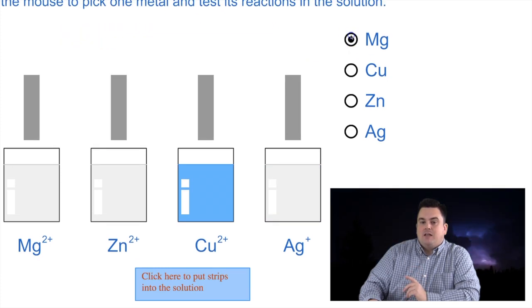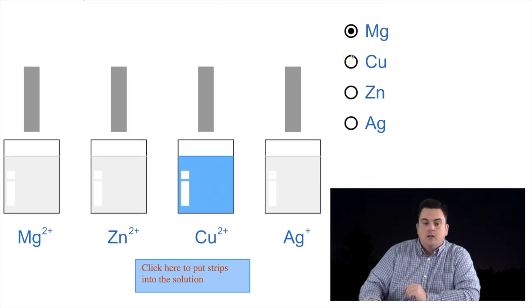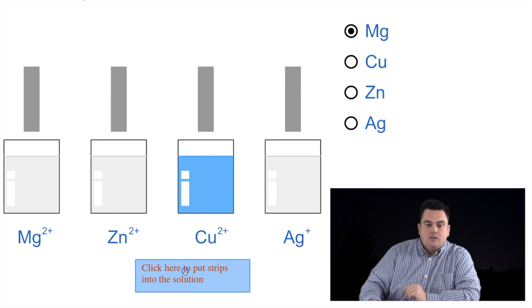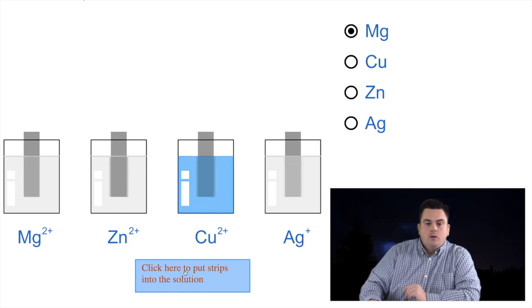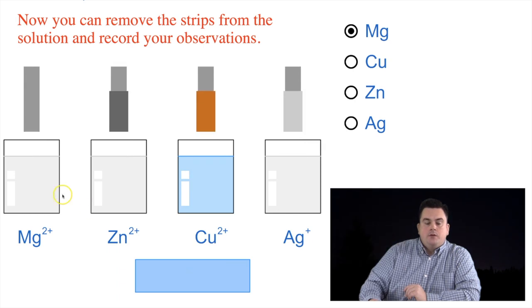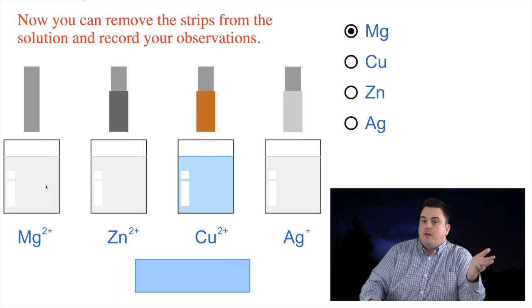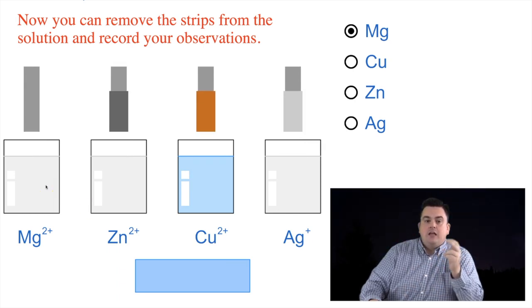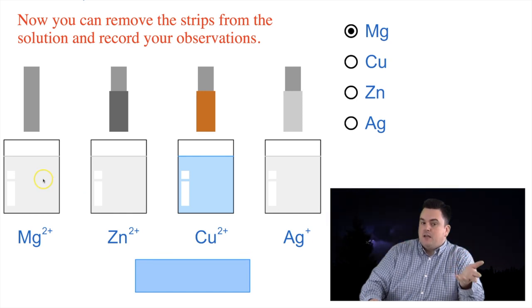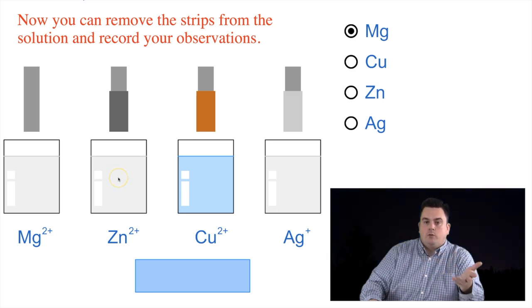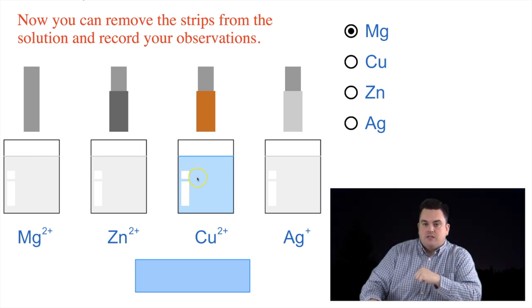If we use magnesium, now magnesium is higher up on table J. So we're going to see what happens in this situation. We see some reactions. As we remove them, you'll see that magnesium, though it's very active and very high on table J, it does not react with itself. However, it is higher than the rest of these. So as it's higher than zinc, it will react with zinc ions. And we'll do the same thing with copper and silver ions.